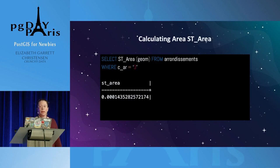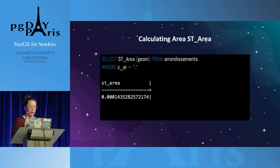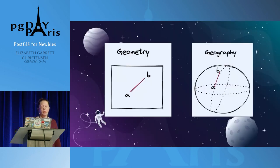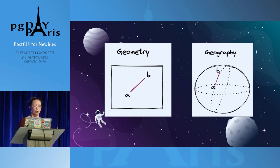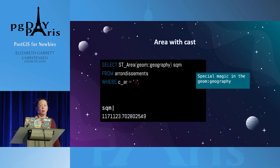If I want to calculate an area, I can use the ST_Area function. I'll just look for the area for Arrondissement 3. This data, though, is a really small number — because you're querying the database about latitude and longitude, and those are going to be pretty small increments since you're talking about the entire globe. If you want to get data in meters, miles, something that's human readable, you'll need to cast the data to geography. Here's that same area query where I'm casting from geom to geography, and in square meters I get a human-readable number.